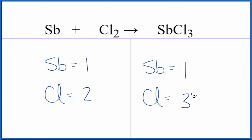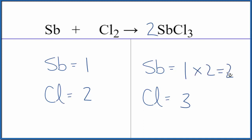So when we end up with this odd number here, it's usually easiest to get this to be an even number. So if I put a 2 as my coefficient — 1 times 2 would give me 2, but 3 times 2 would give me 6.